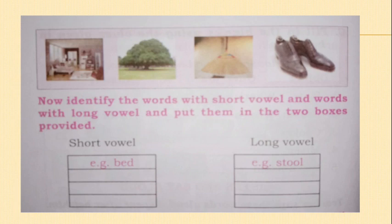In the next page you can see two columns. In the first column you should write short vowel words and in the second column you should write long vowel sounds. Short vowels: bed, mop. Long vowels: stool, tree, shoes. Whenever you read some words, you have to practice judging whether the word has a short vowel or a long vowel.